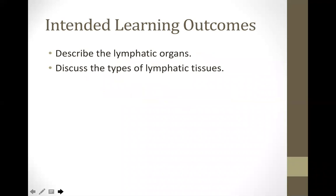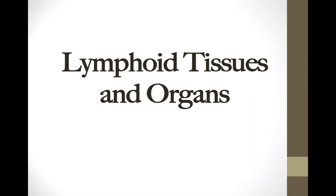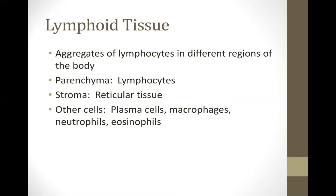Our topic is lymphoid tissues and lymphatic organs. Our intended learning outcomes are to describe the lymphatic organs and to describe the different types of lymphatic tissue. The fundamental type of tissue for lymphatic tissues and lymphatic organs is connective tissue. The specific subtype is lymphatic tissue.